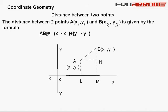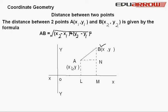AB is equal to under root (x2 minus x1) square plus (y2 minus y1) square. Here is the point A and here is the point B. x1 is the first coordinate on the x-axis and y1 is the first coordinate on the y-axis. Here is point (x2, y2). So the distance formula in coordinate geometry is AB equals under root (x2 minus x1) whole square plus (y2 minus y1) whole square.